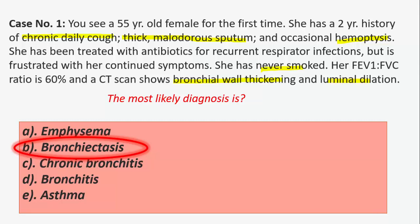The most sensitive and specific test is high-resolution thoracic CT, which is the gold standard and diagnostic. On HRCT, we see signet ring signs — dilated bronchi with thickened walls where the diameter of the bronchus is greater than 1.5 times the diameter of the accompanying artery.